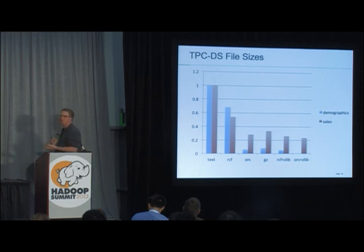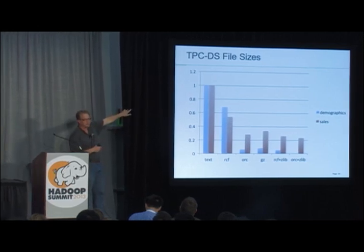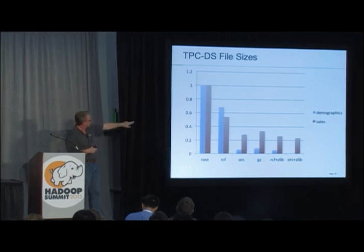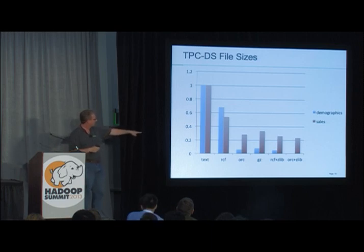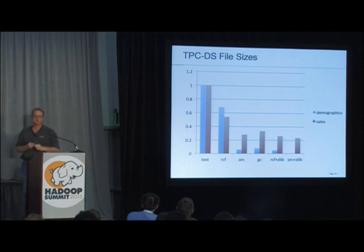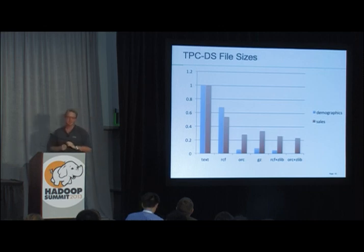Looking at sample TPCDS data — a standard analysis benchmark — with text normalized to 1.0, RC file comes in around 60% of text size. ORC is much smaller. With gzip-compressed text, RC file plus zlib, and ORC plus zlib, ORC compresses so small that it nearly disappears from the chart. The data really does get that small — one danger of using generated benchmark data.